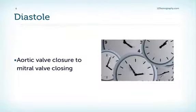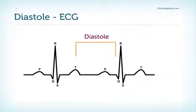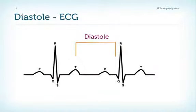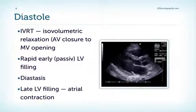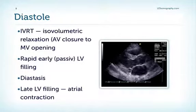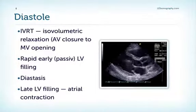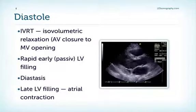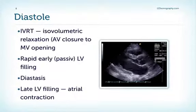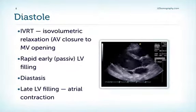Diastole is defined as the time interval between aortic valve closure and mitral valve closure. In the ECG, diastole occurs between the T wave and the onset of the QRS complex. Diastole consists of several components: the isovolumetric relaxation time, which is defined as the time between the aortic valve closure and the mitral valve opening; rapid early or passive left ventricular filling; diastasis; and finally late left ventricular filling, which correlates with atrial contraction.